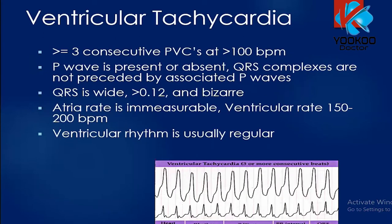Ventricular tachycardia is defined as three or more consecutive PVCs at more than 100 beats per minute. The P wave may be present or absent, and QRS complexes are not preceded by associated P waves. The QRS is usually wide — greater than 0.12 seconds — and bizarre in appearance. The atrial rate is immeasurable, the ventricular rate is typically 150 to 200 beats per minute, and the ventricular rhythm is usually regular.